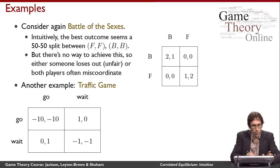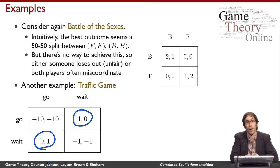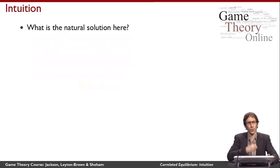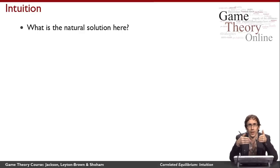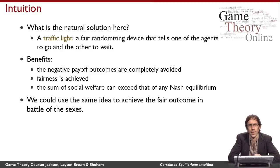In total we have two pure strategy equilibria that are again asymmetric, similar to Battle of the Sexes, and of course a mixed strategy equilibrium is also possible. But let's think about what would really happen in the world at an intersection where cars might collide. What we really do is use a traffic light — a fair randomizing device that recommends actions to the agents.